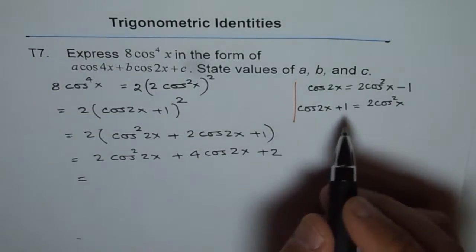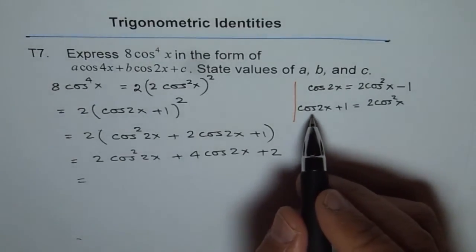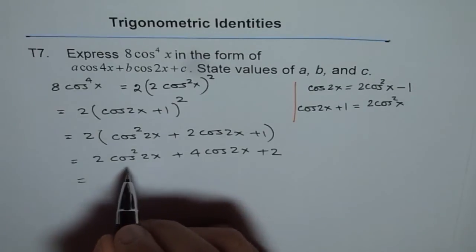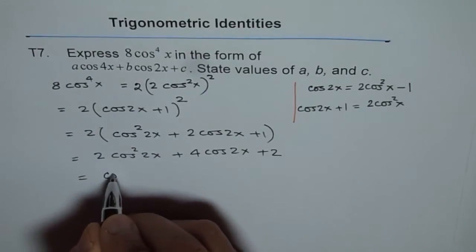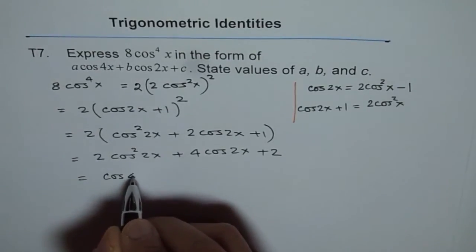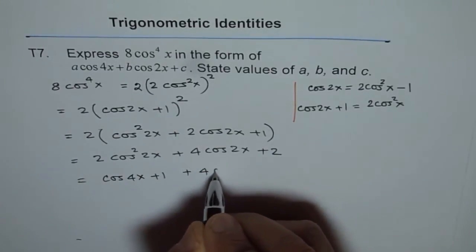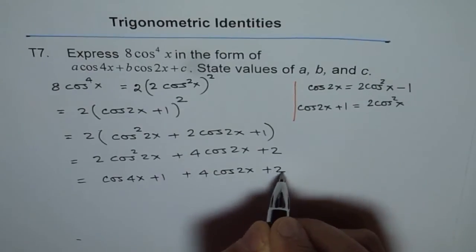Now 2 cos square x can be written as cos 2x. 2x becomes 4, do you see that? So this could be now written as cos of 4x plus 1 plus 4 cos 2x plus 2.